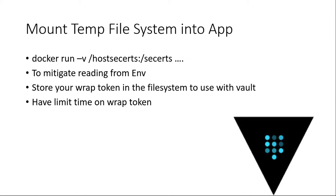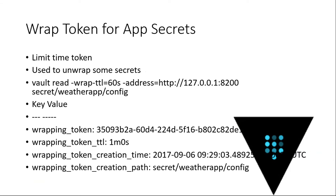Security is all about mitigation — how hard are you going to make it for a hacker to get into your system? You have to mitigate everything. Vault has something called wrap tokens. You can say: wrap this for 60 seconds, here's the address, and I only want to allow access to weather-app/config. Vault creates a wrap token with a random UUID that you use to connect and get back your secrets. But once you use it, it's gone. If a hacker inspects your container after 60 seconds and tries to use that token, they won't be able to get the secrets anymore.